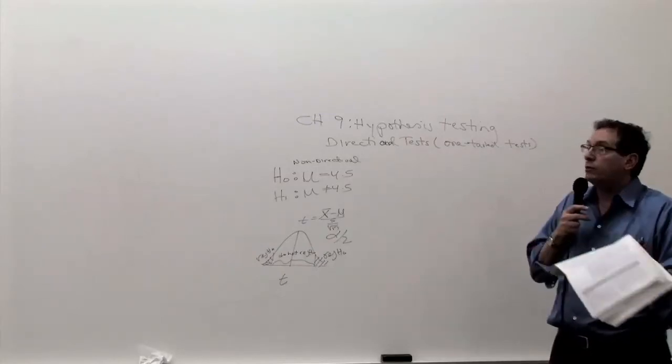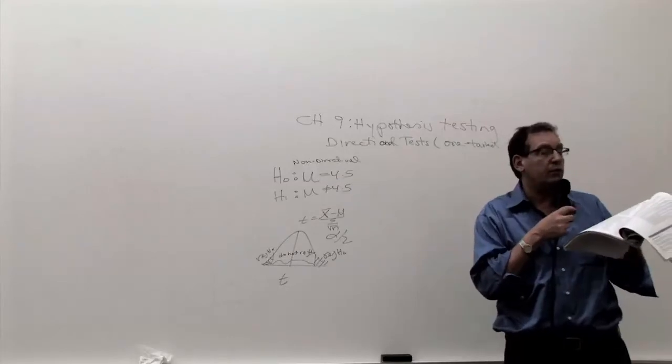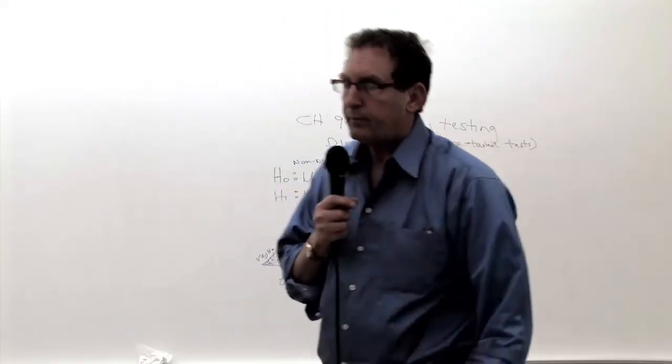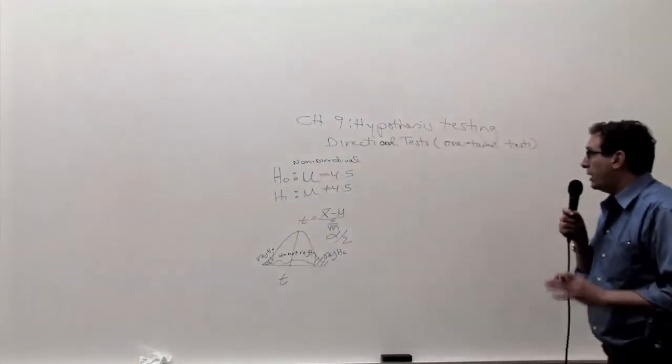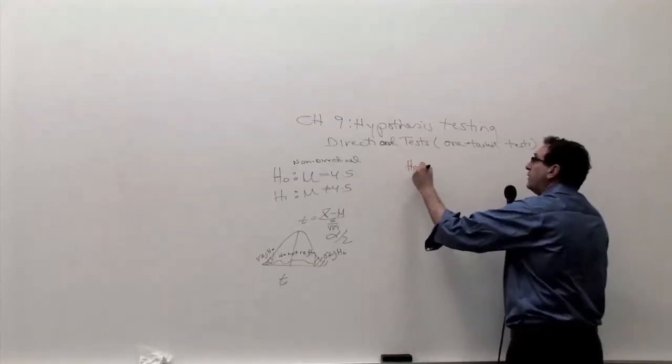They don't say, do you want to reject H0 or accept H0? They ask you a very English type question. Do you need to adjust the production equipment? And the answer is going to be either yes or no. It needs to be adjusted. How do you solve the problem? Well, the first step, again, every hypothesis testing question involves four steps.